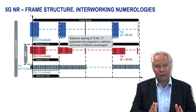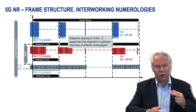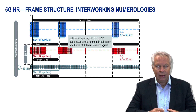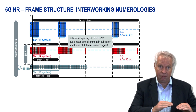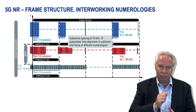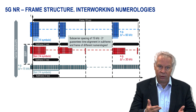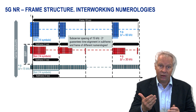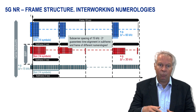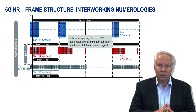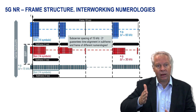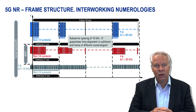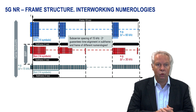What is the advantage of that? If we want to mix different numerologies — dynamically hopping between them — looking at the bottom of the slide: with 15 kHz subcarrier spacing, one slot lasts 1 millisecond. With 30 kHz (red), we have two slots in one millisecond. With 60 kHz, we end up with four slots in one subframe. So at the 1 millisecond time raster, timing remains aligned, which is a fantastic idea for switching between multiple numerologies.